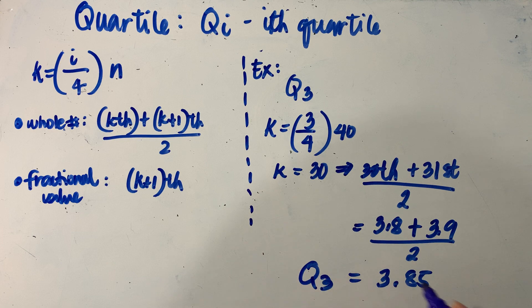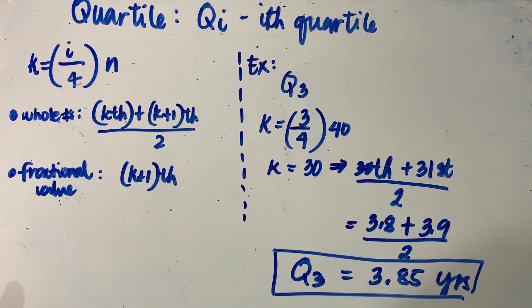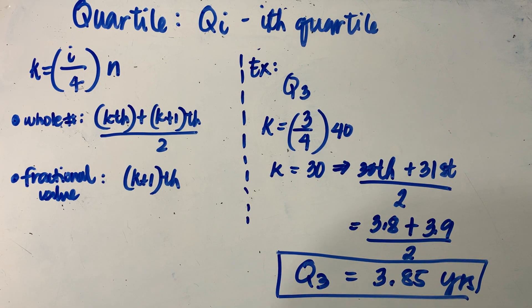So that means to say our third quartile is 3.85 years. Now, how do we interpret this? When we say the third quartile is 3.85 years,